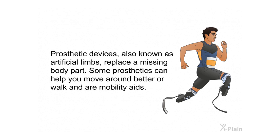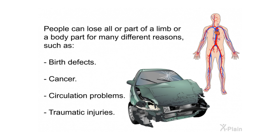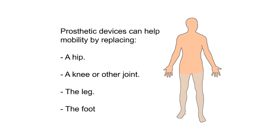Prosthetics. Prosthetic devices, also known as artificial limbs, replace a missing body part. Some prosthetics can help you move around better or walk and are mobility aids. People can lose all or part of a limb or a body part for many different reasons, such as birth defects, cancer, circulation problems, or traumatic injuries.